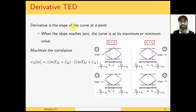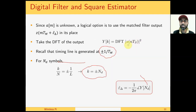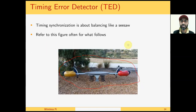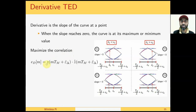We already know that the derivative is the slope of a curve at a point. When this slope reaches zero it's either a maximum or a minimum value. To maximize the correlation we take the derivative of Z squared, which gives us 2Z into Z-dot. The constant 2 can be ignored, giving us Z into Z-dot — the matched filter output and the derivative of the matched filter output in time domain, as opposed to the frequency domain approach used in carrier frequency synchronization.